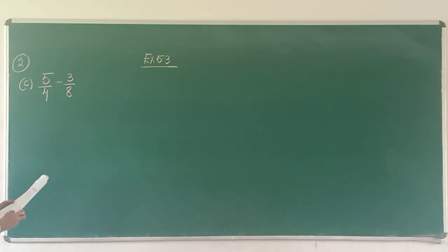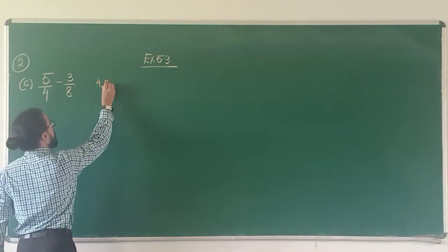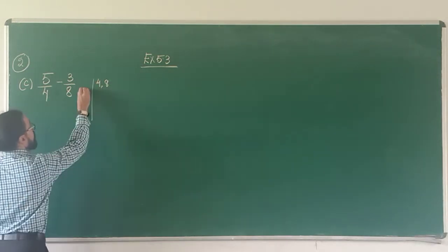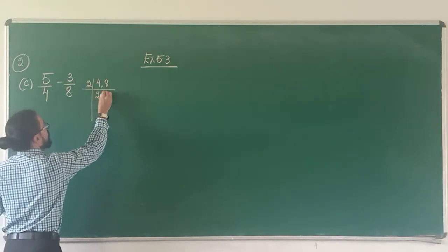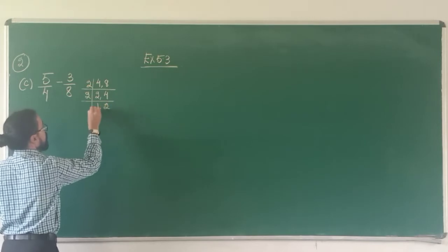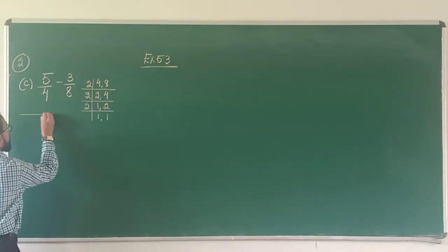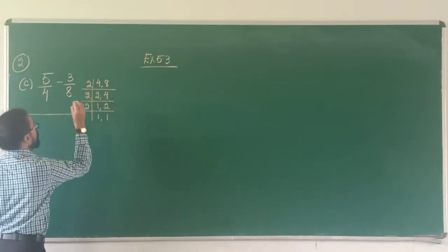First simple sum, 5 upon 4 minus 3 upon 8. First I find the LCM of 4 and 8. 2, 2's are 4, 2 4's are 8. 2 1's are 2, 2 2's are 4. And again by 2, 1 1. So what LCM do I get? 2 2's are 4, 4 2's are 8.